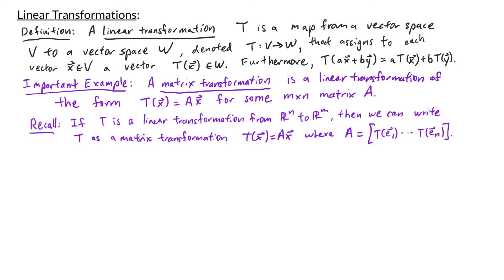We can write down the standard matrix for that transformation. What we'll eventually learn is that any linear transformation can be thought of as a matrix transformation, even when your inputs and outputs aren't traditional vectors. For example, we learned about the vector space of polynomials in the previous video, so we can have a linear transformation that sends a polynomial to a different polynomial, and that we'll be able to describe as a matrix transformation.